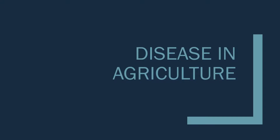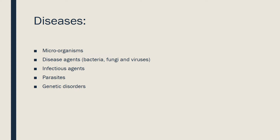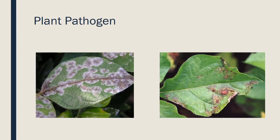Diseases have a detrimental effect on plants and animals and impact market access and agricultural production. Diseases include microorganisms, disease agents, bacteria, fungi, and viruses, as well as infectious diseases, parasites, and genetic disorders. Plant pathogens can be fungal, bacterial, or viral and can damage plant parts above or below the ground. Identifying systems and knowing when and how to effectively control diseases is an ongoing challenge for farmers and government departments.